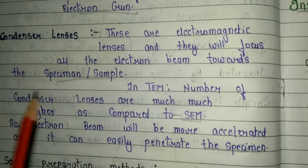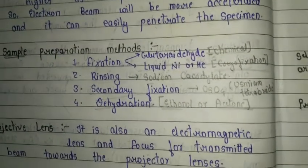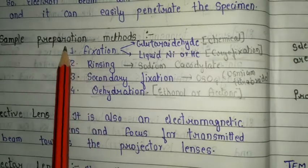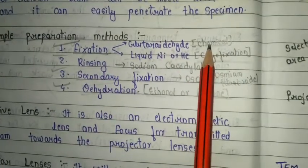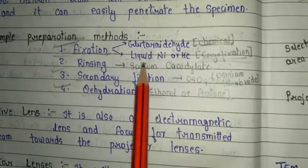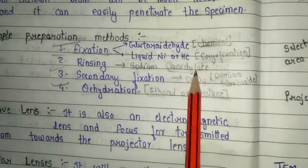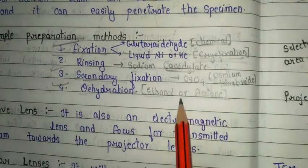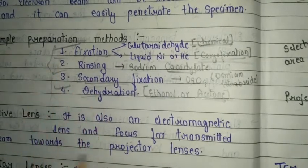Sample preparation is also very important in TEM. There are four steps: fixation, rinsing, secondary fixation, and dehydration. For fixation, two methods are used — chemical fixation using glutaraldehyde, and cryo-fixation using liquid nitrogen and helium. For rinsing, sodium cacodylate is used. For secondary fixation, osmium tetroxide (OsO4) is used. For dehydration, ethanol and acetone are used.